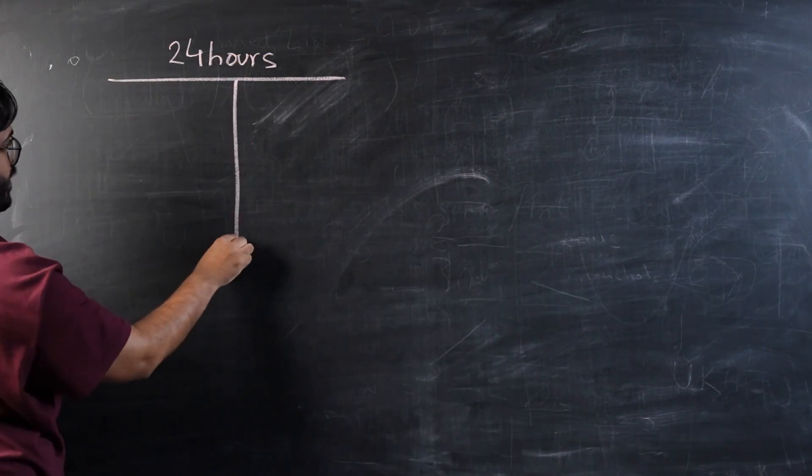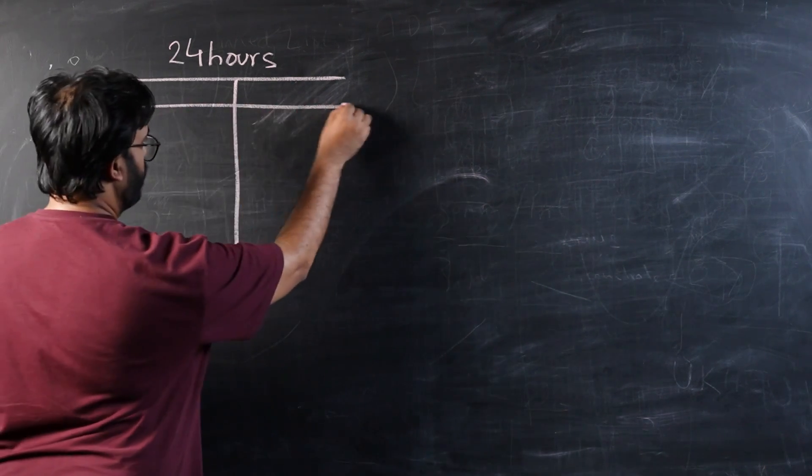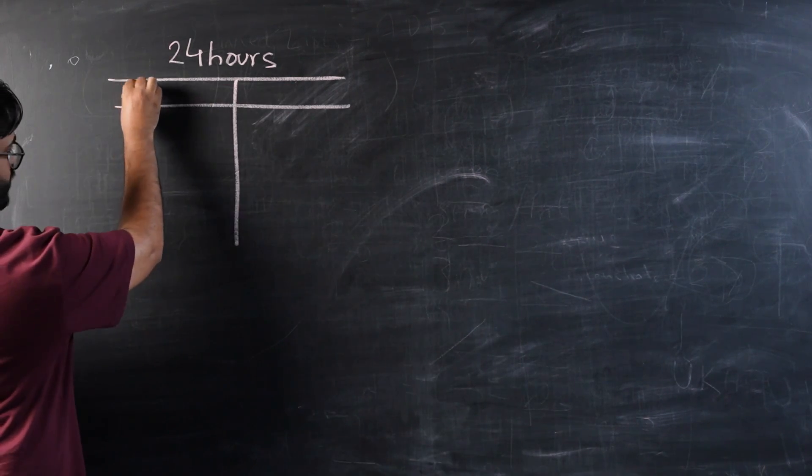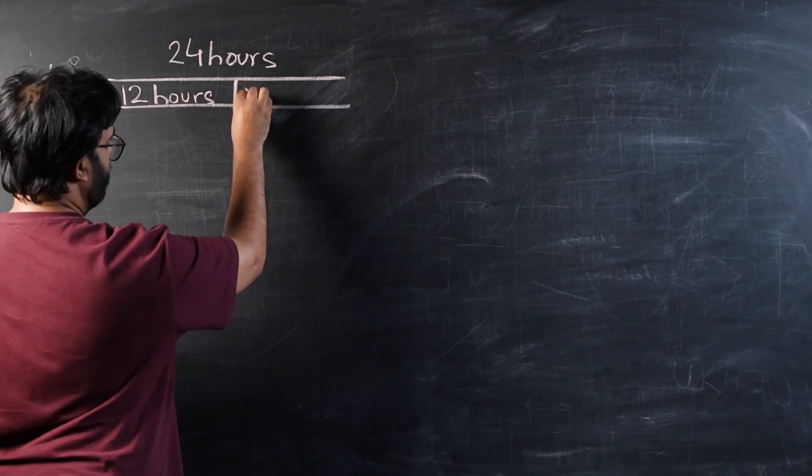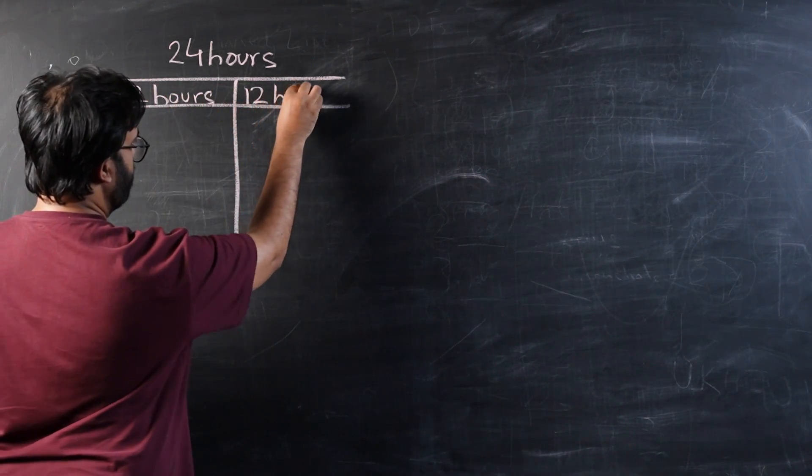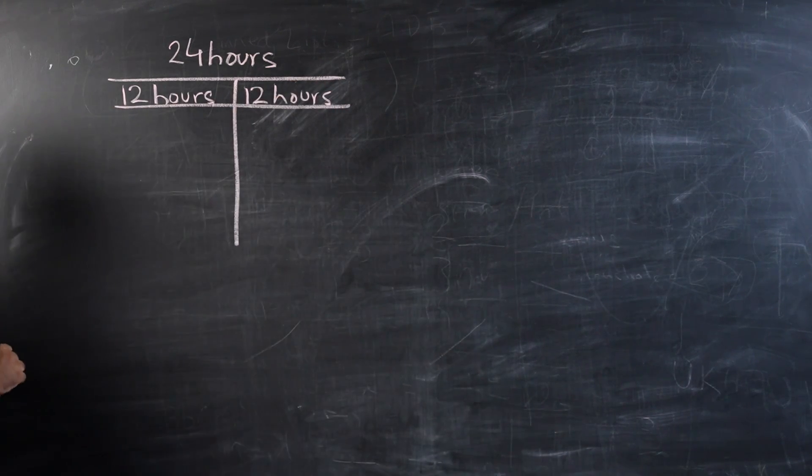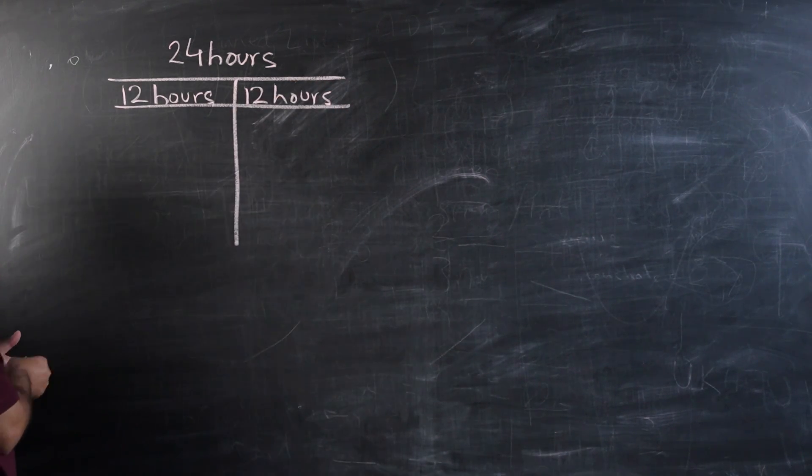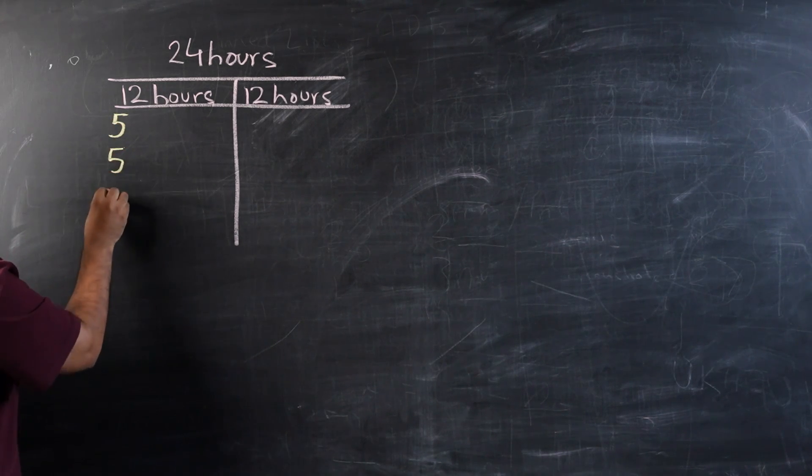So first of all, you have 24 hours in total. The first thing we're going to do, we're going to split your day into halves of 12 hours each. So you're going to visualize your day as two components of 12 hours each. In the first part of 12 hours, we are going to apply 5, 5, and 2 rule.